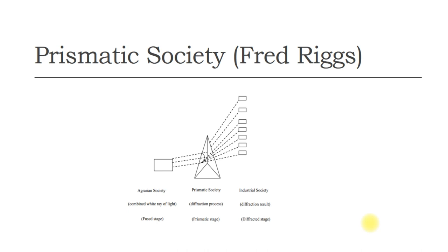According to him, prismatic society has three important characteristics: heterogeneity, overlapping, and formalism. Wherever there exists simultaneous presence of quite different systems, practices, and viewpoints, it is heterogeneity.